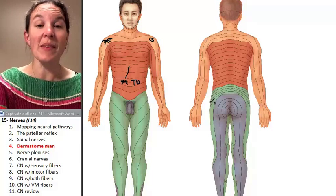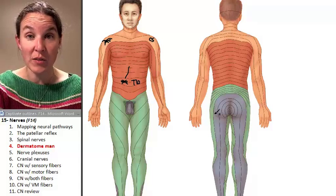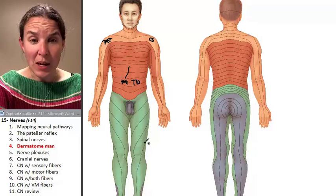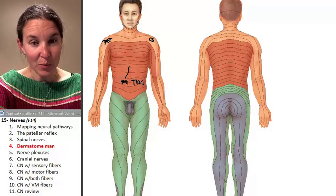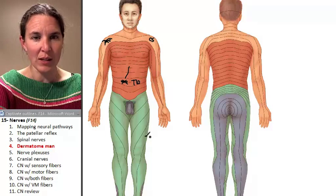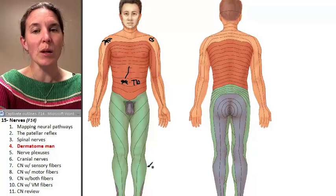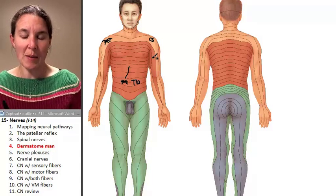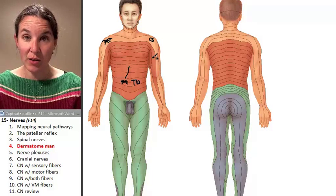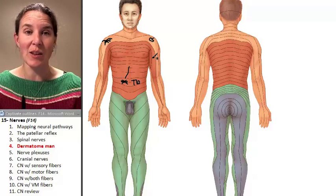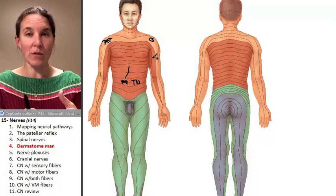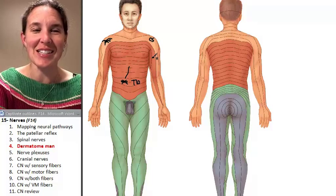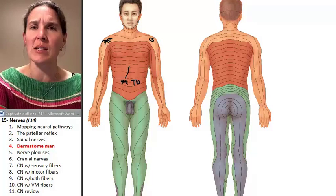The other interesting thing that happens with spinal nerves is that they actually braid. When spinal nerves become a named nerve — like the sciatic nerve, the musculocutaneous nerve, or the axillary nerve — those nerves come from braided spinal nerves. These are called plexuses. We're going to talk about those next: what is a nerve plexus, and why would we have them?